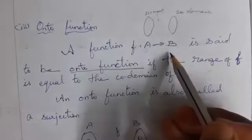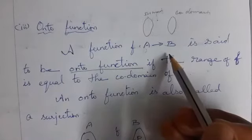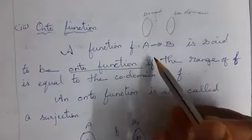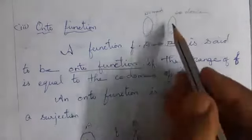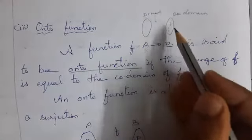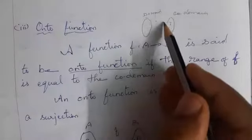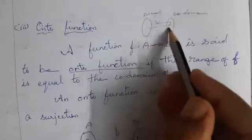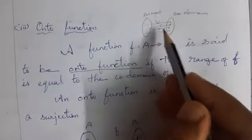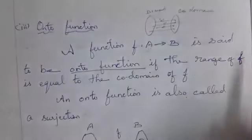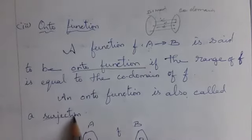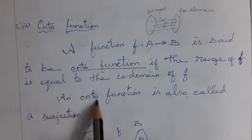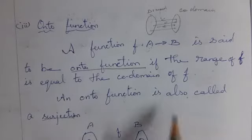All the elements in B have a pre-image in A. That is, all the elements in the co-domain have a pre-image. That is the correct meaning of onto function. One more name for onto function is surjection.